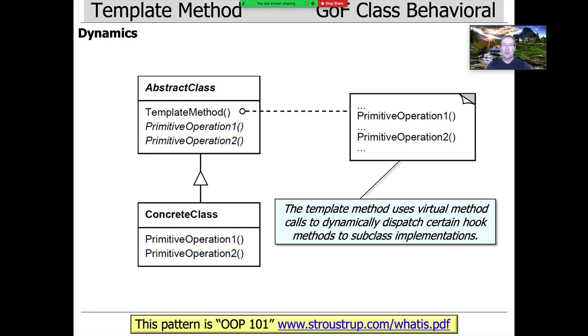This is just good old object-oriented programming 101. You have a super class or base class with virtual methods, they may or may not be pure virtual methods, but then you allow them to be selectively overridden by subclasses or derived classes.